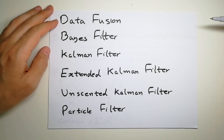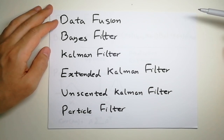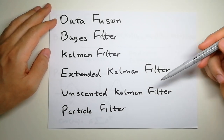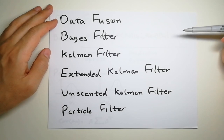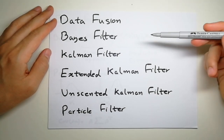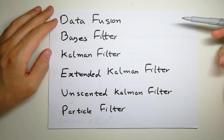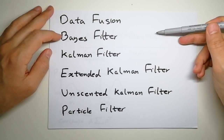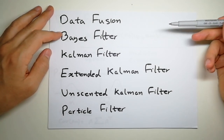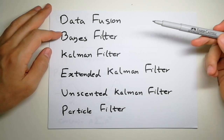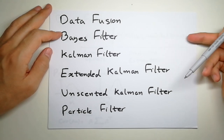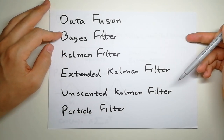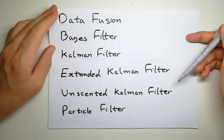In this video I'm going to talk about data fusion and the following filters which are pretty common in robotics applications. In my other video I talked about the Bayes filter — the equations, the proof, how we get them — so I strongly recommend you have a look at the Bayes filter. I've implemented these filters with Python, so have a look on my website to get the code.